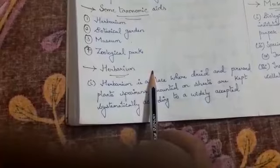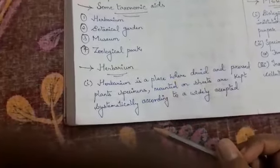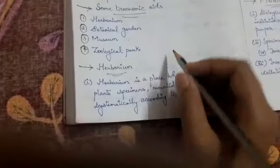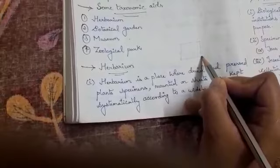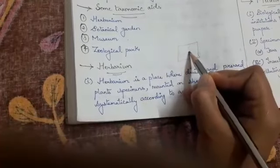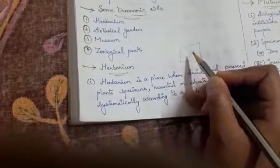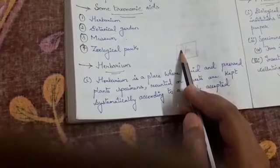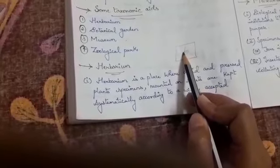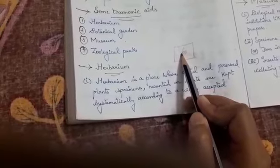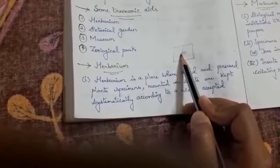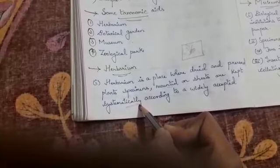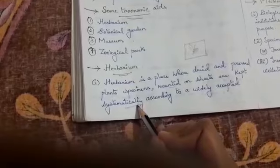We collect specimens like a plant, press that plant under a book, and then there is a herbarium sheet. You place the pressed plant on the herbarium sheet by sticking it with glue or tape. This should be done in a systematic manner — not randomly arranged, but placed in a systematic way.